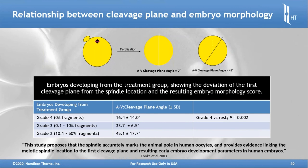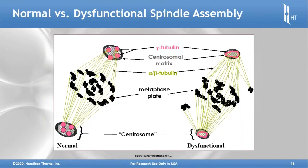The study proposes that the spindle accurately marks the animal pole in a human oocyte and provides evidence linking the meiotic spindle location to the first cleavage plane and resulting early embryo development. This is something that can prospectively become more automated in the future if deemed beneficial on a clinical basis.